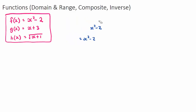Let's look at our three functions and find the output when we give the input some numbers. If you see f(3), you find the f function — which is x squared minus 2 — and substitute 3 in for x. So we get 3 squared minus 2, which is 9 minus 2, which equals 7. So if the input is 3, the output is 7.